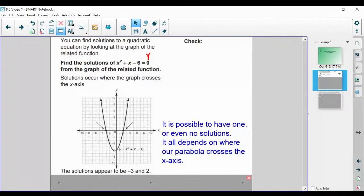Looking at our graph, the solutions appear to be -3 and 2. It's possible to have one or even no solutions. For this example, we have two solutions because the parabola hits the x-axis twice. Sometimes a parabola hits the x-axis once, giving one solution, and sometimes it won't hit the x-axis at all, giving no solutions.